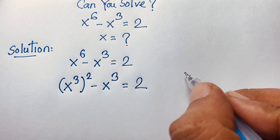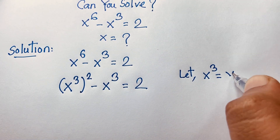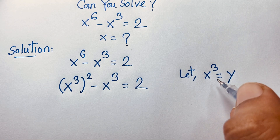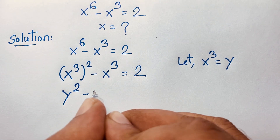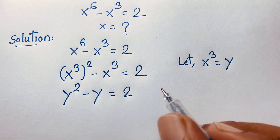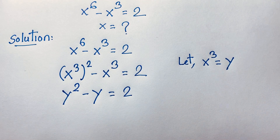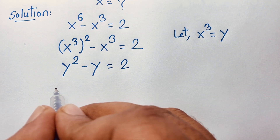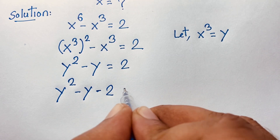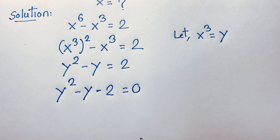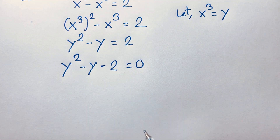Now, I can let x to the power 3 equal y. So this equation becomes y to the power 2 minus y is equal to 2. I just substitute this value into the equation. We'll find a nice quadratic equation. This equation becomes y squared minus y, and if I move 2 to this side, it will be negative 2 is equal to 0.